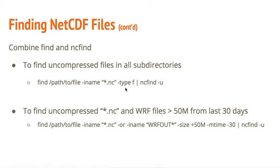If you want to find files which both end with .nc but also WARF files which don't, and you also want to find files larger than 50 megabytes from the last 30 days — because let's say you've been compressing your files all the time except for the last month — you would use a find command with two -inames: -iname '*.nc' or -iname '*.warfout', with the -size flag and -mtime for files modified within the last 30 days, and then pipe that through to ncfind. Let's try that out now and see what we get.